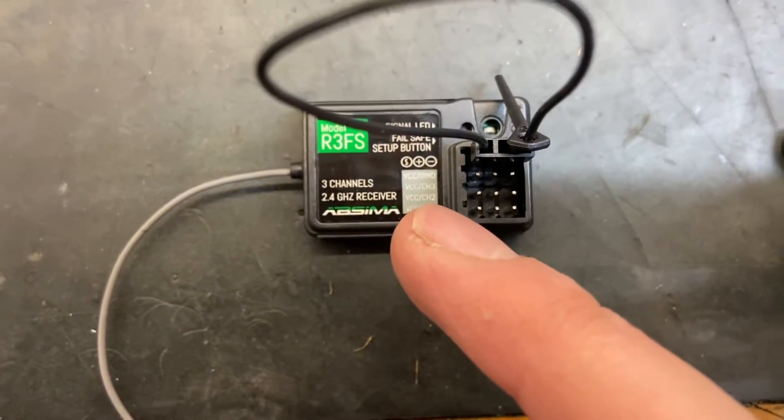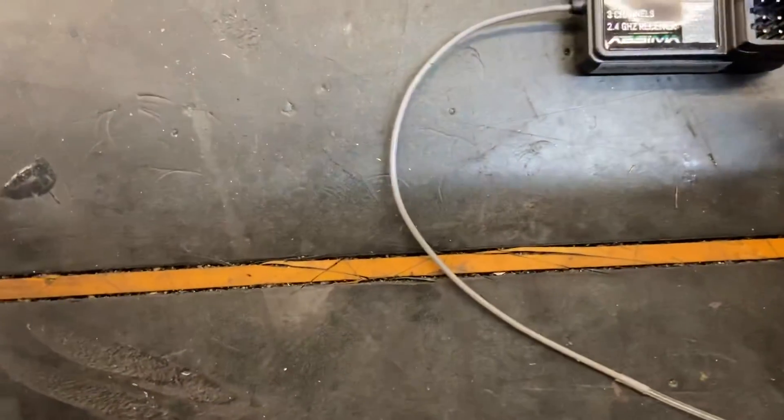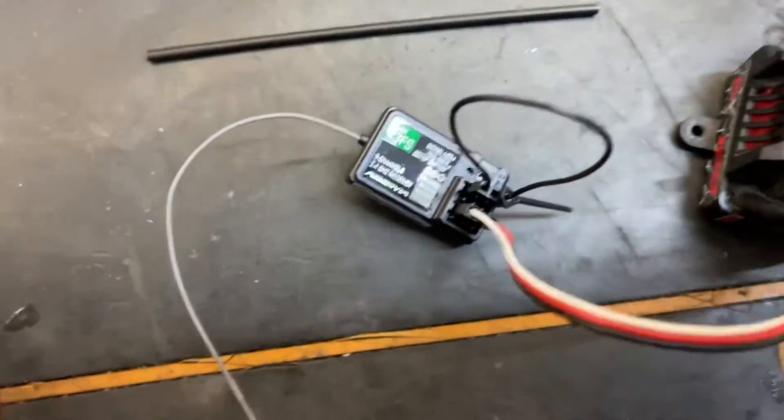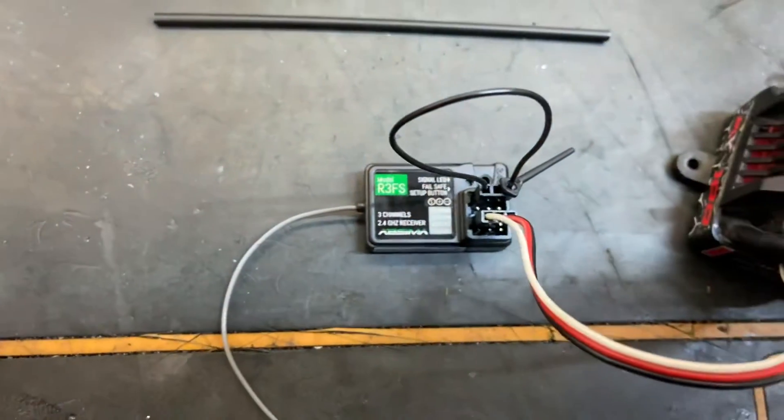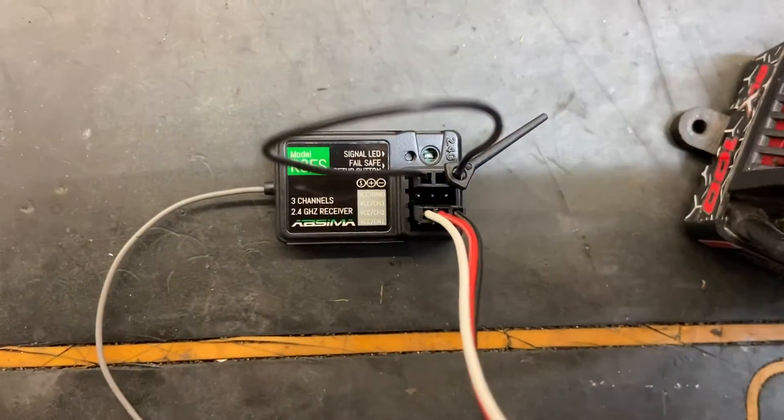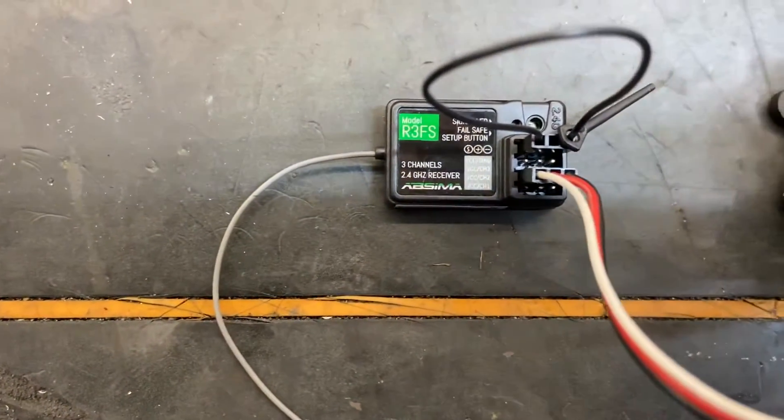It's actually labeled if you can see there as well, so you've got negative, positive, and signal. That goes in channel two like so. If you're using a nitro car, then you'd put your throttle servo in channel two and you'd plug your battery into the spare port, channel three.